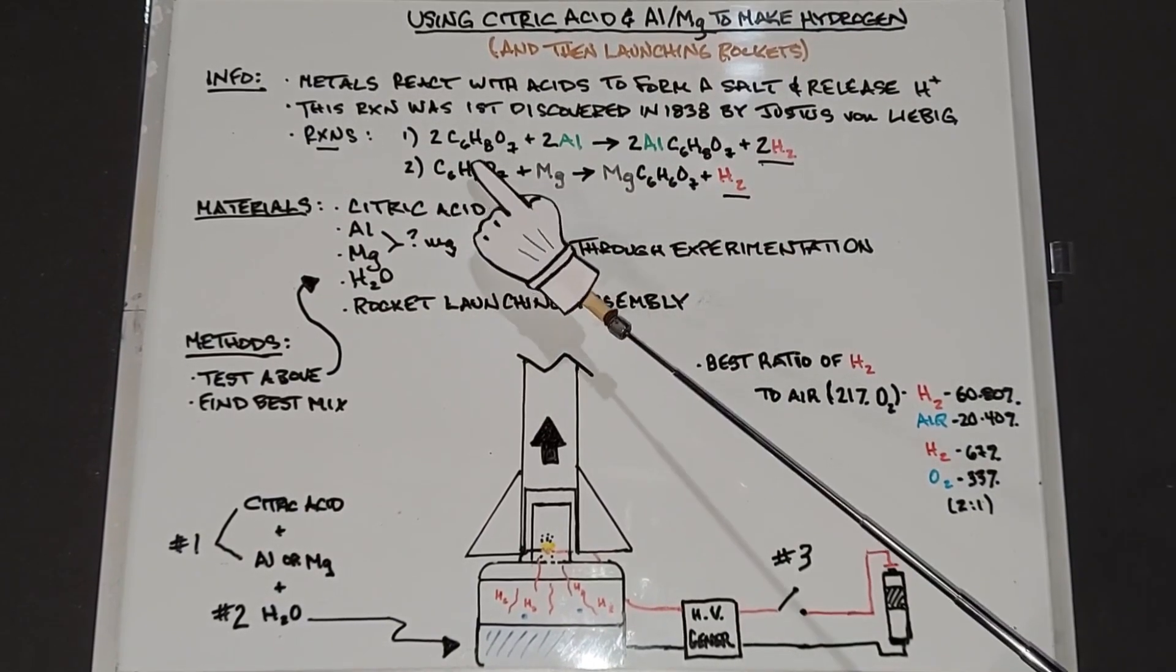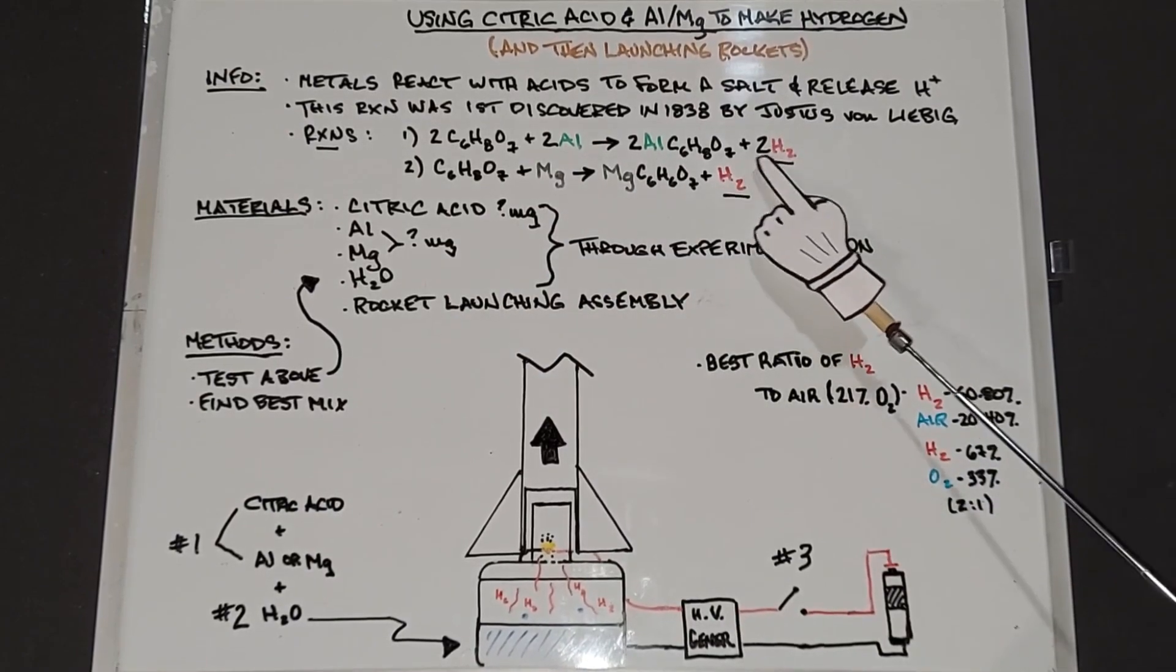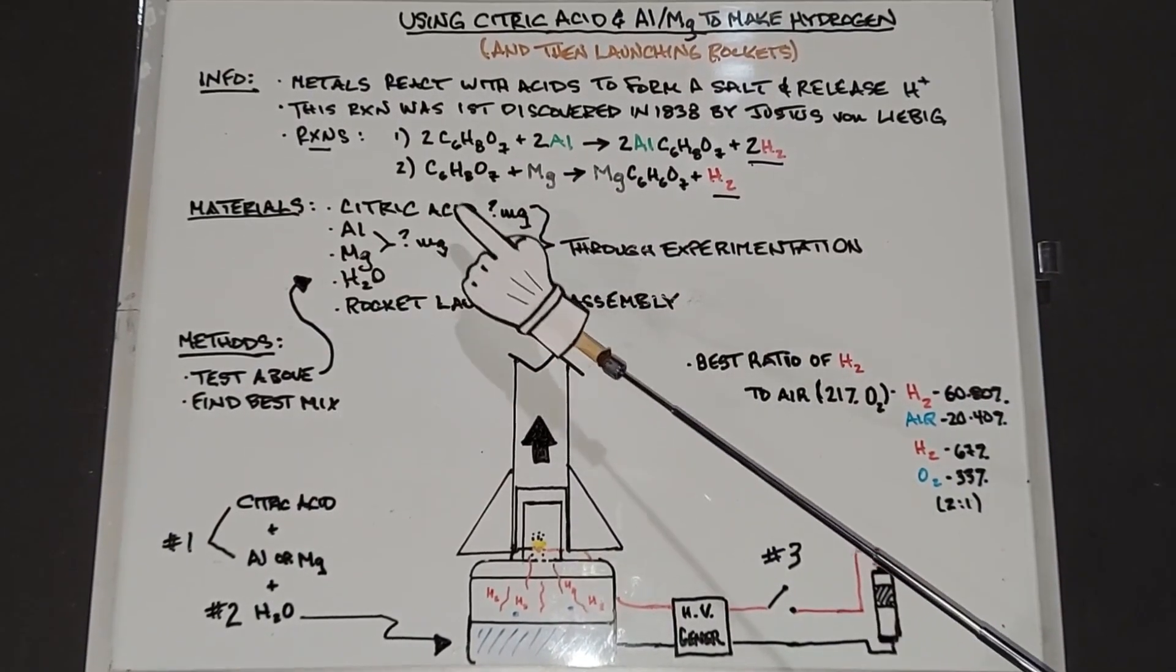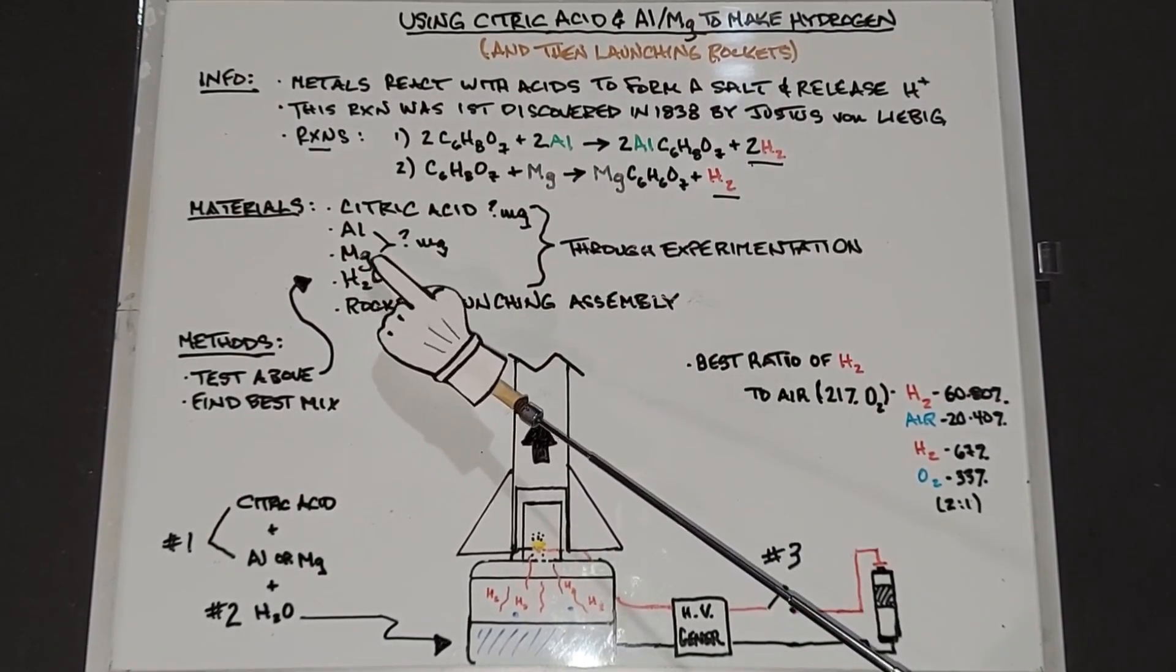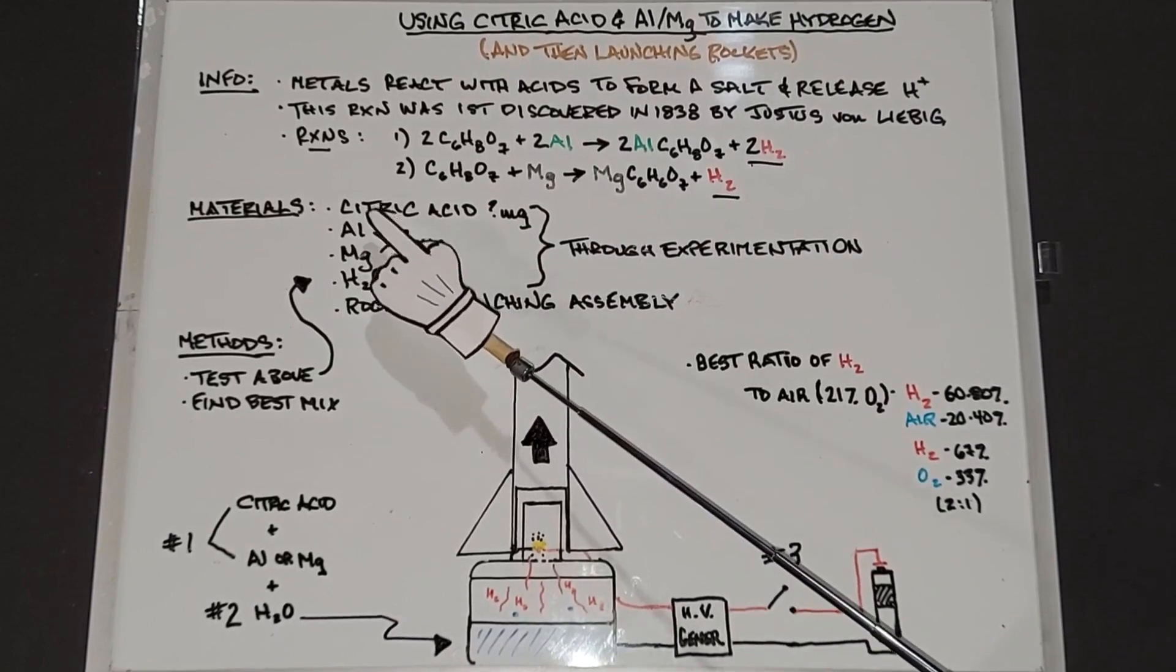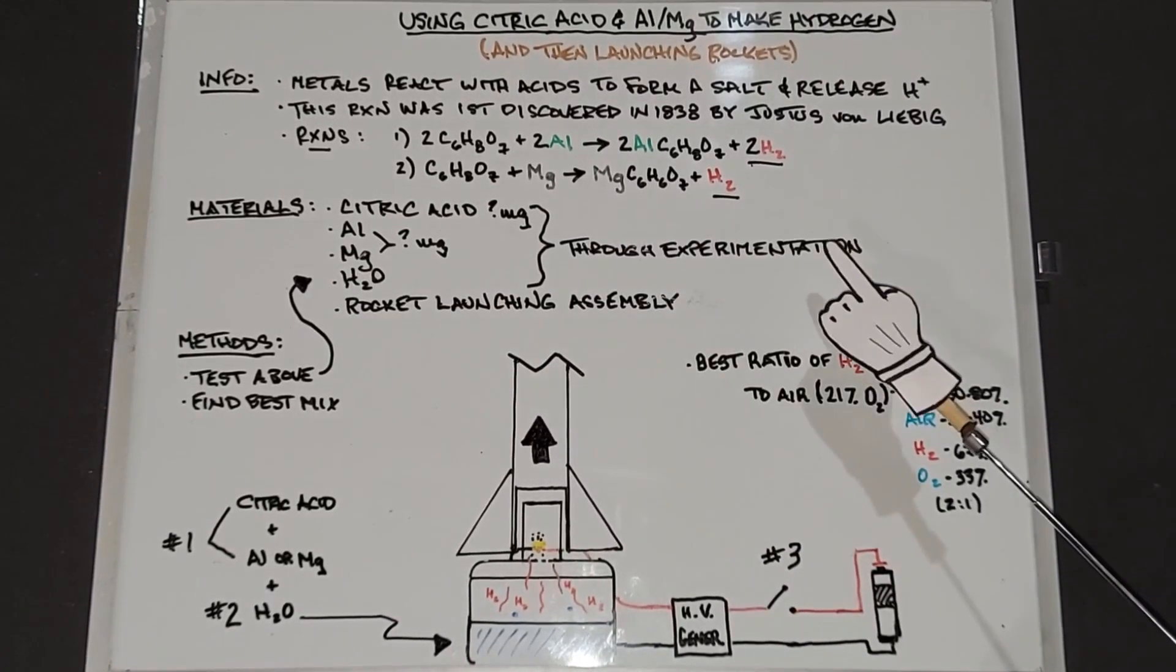The second one is citric acid plus magnesium yields magnesium citrate and hydrogen. Pretty straightforward. Our materials: we only need a handful of things. We need citric acid, aluminum and magnesium, because we're going to be testing these two against each other, and water to dissolve the citric acid in.